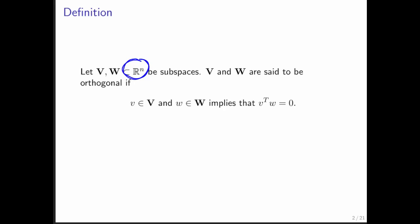then we can talk about the two subspaces being orthogonal. If any time you take any vector from one of the subspaces, V, and you take any arbitrary other vector, W, from subspace W, then always it's the case that these two vectors are orthogonal to each other.